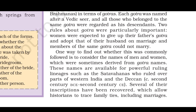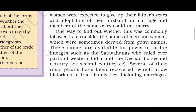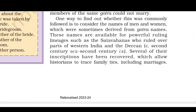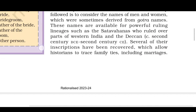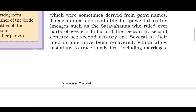One way to find out whether this was commonly followed is to consider the names of men and women, which were sometimes derived from gotra names. These names are available for powerful ruling lineages such as the Satavahanas, who ruled over parts of western India and the Deccan from the second century BCE to the second century CE. Several of their inscriptions have been recovered.